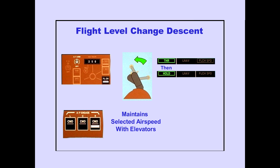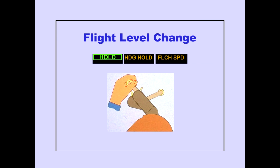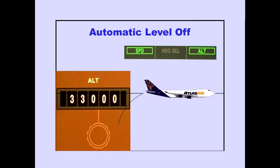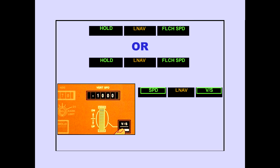For a flight level change descent, thrust is enunciated, then the autothrottle reduces thrust to achieve the desired rate of descent. Hold will be displayed on the PFD after the autothrottle reduces thrust. The autopilot flight director uses the elevators to maintain the selected airspeed by varying the pitch angle. In flight level change, if the thrust levers are manually repositioned, throttle hold is displayed. The flight level change mode ends with an automatic level off. When the airplane captures an altitude, the autothrottle mode changes to speed, and the pitch mode changes to altitude. When the autopilot flight director is operating in flight level change or VNAV, pushing the vertical speed switch transfers the autothrottle to the speed mode.